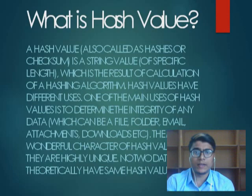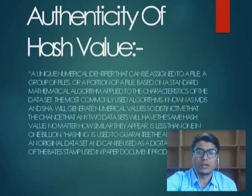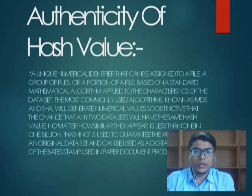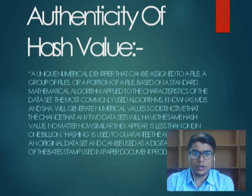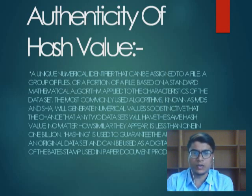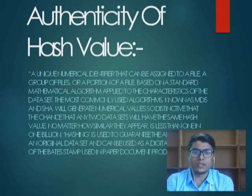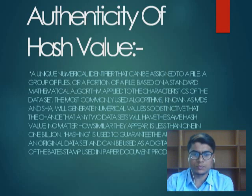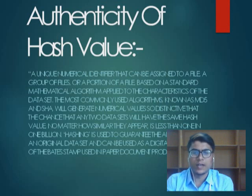Now we will see the authenticity of hash value. A unique numerical identifier can be assigned to a file, a group of files, or a portion of a file based on a standard mathematical algorithm applied to the characteristics of the dataset. The most commonly used algorithms, known as MD5 and SHA, generate numerical values so restricted that the chance any two datasets will have the same hash value, no matter how similar they appear, is less than 1 in 1 billion.